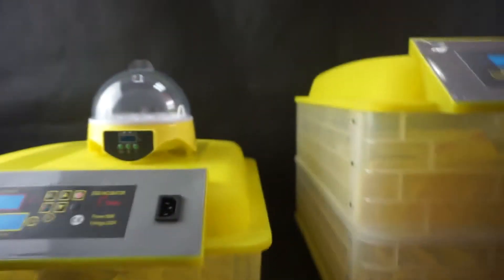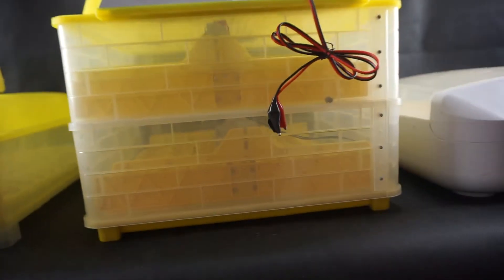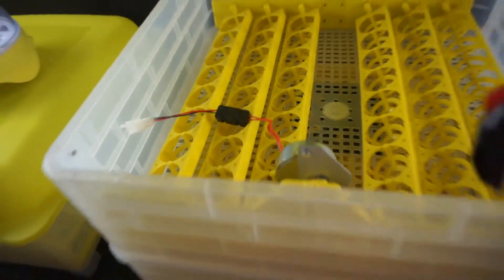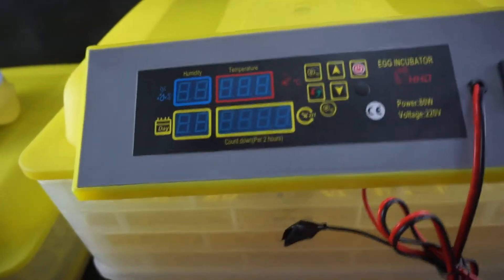48 eggs, 56 eggs, 96 eggs and 112 eggs incubators are fully automatic machines, just with different number of hatching eggs and different in appearance. They can meet different needs of the customers.